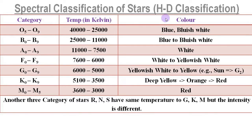We start with Henry Draper classification, or HD classification of stars, which is based on temperature. As you see on the screen, stars are classified into some categories based on temperature. The O category stars have temperature 40,000 Kelvin to 25,000 Kelvin, and their color is blue or bluish white. The B category stars have temperature 25,000 Kelvin to 11,000 Kelvin, and their color is also blue to bluish white. Here we should note that the lower the suffix, the higher the temperature.